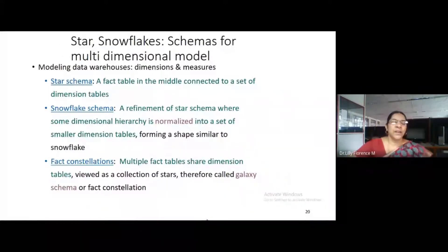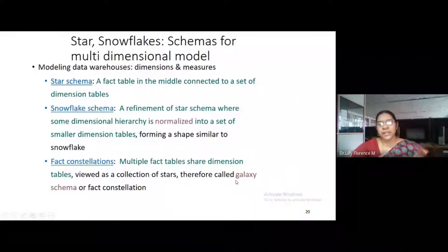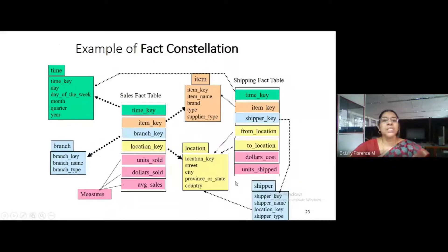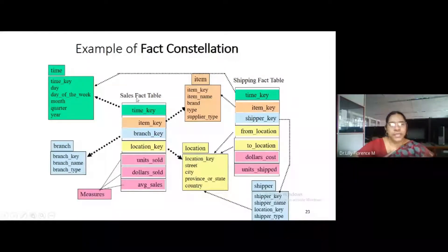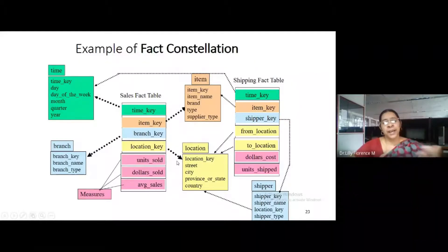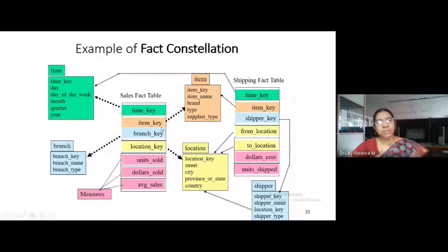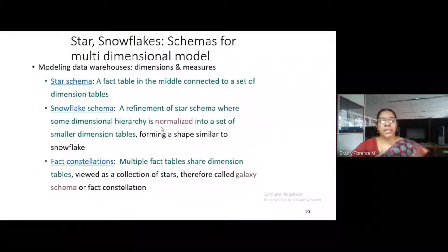The third one is fact constellations — it will have multiple fact tables which share the dimension tables. In other words, we can say galaxy schema, since it has more stars. We have a sales fact table and another shipping fact table — two fact tables. Each will point to some set of dimension tables along with a hierarchy of smaller dimensions. Similarly, the shipping fact table has its own dimension tables. These are the three schema structures we use in multidimensional data cubes.